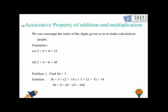Let's work with the associative property of addition and multiplication. We can rearrange the order of digits given so as to make our calculations simple. This is what states associative property. For example, if you are adding 2, add 4, add 6, to make your calculations simple, you can think about adding 4 and 6 at the first place.